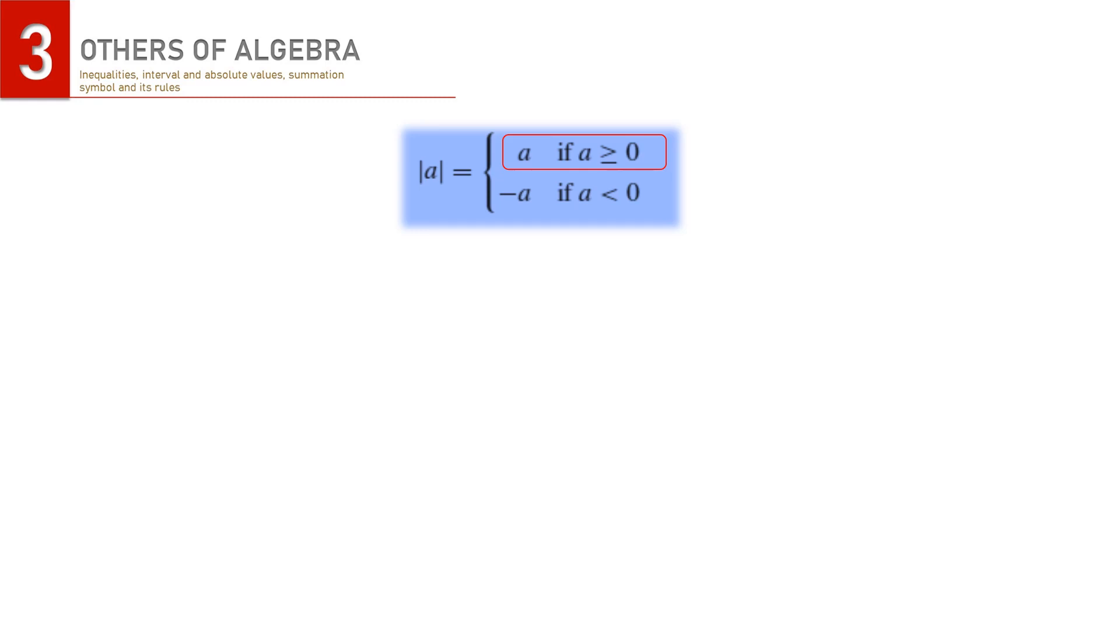On the other hand, if a is negative, then to find the absolute value of a, a must be multiplied by minus 1 so that the absolute value turns out to be positive.